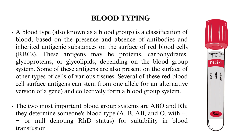Some of these antigens are also present on the surface of other types of cells of various tissues. Several red blood cell surface antigens can stem from one allele and collectively form a blood group system. The two most important blood group systems are ABO and RH, which determine someone's blood type — A, B, AB, and O — with positive, negative, or null denoting RHD status, for suitability in blood transfusion.